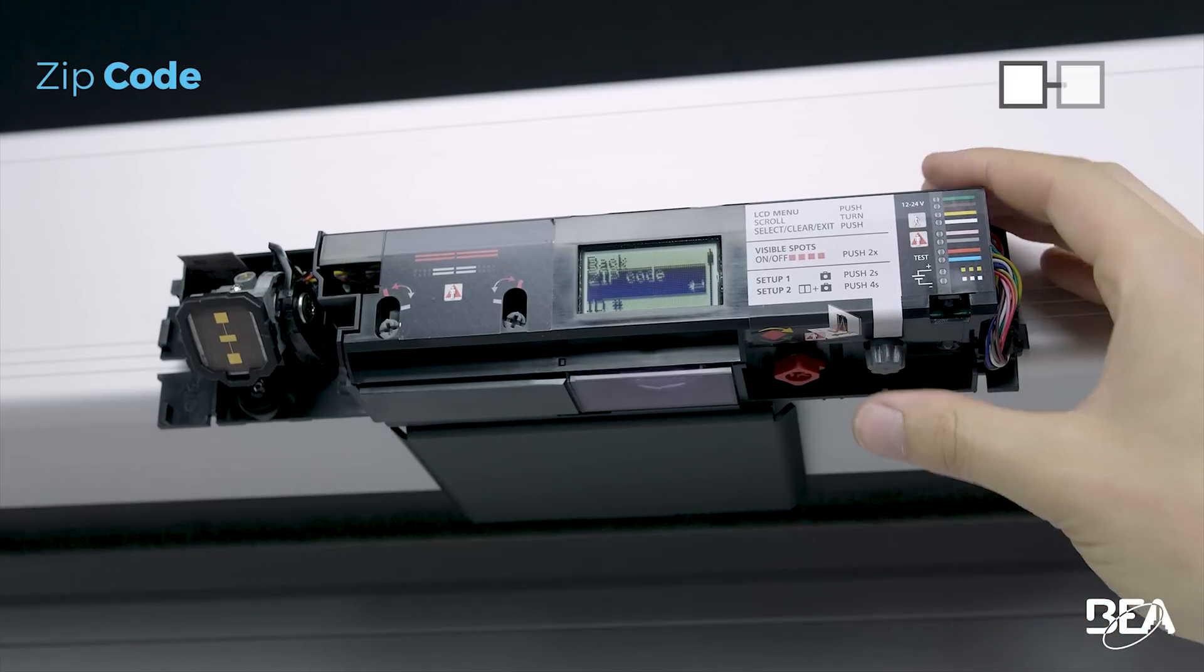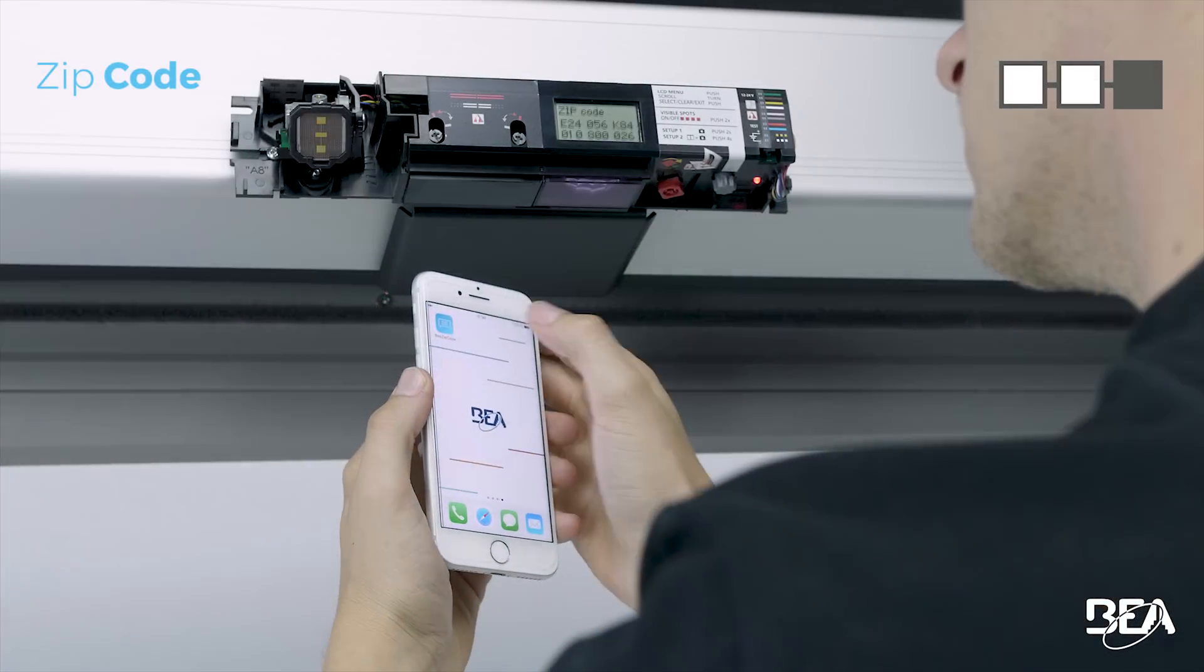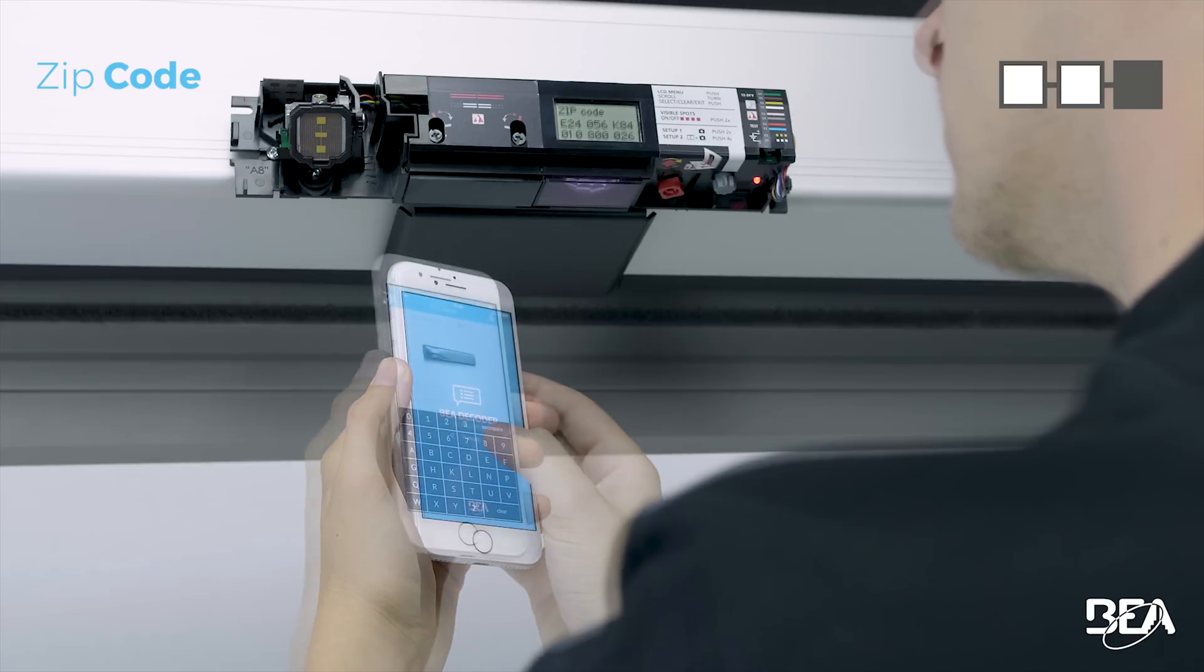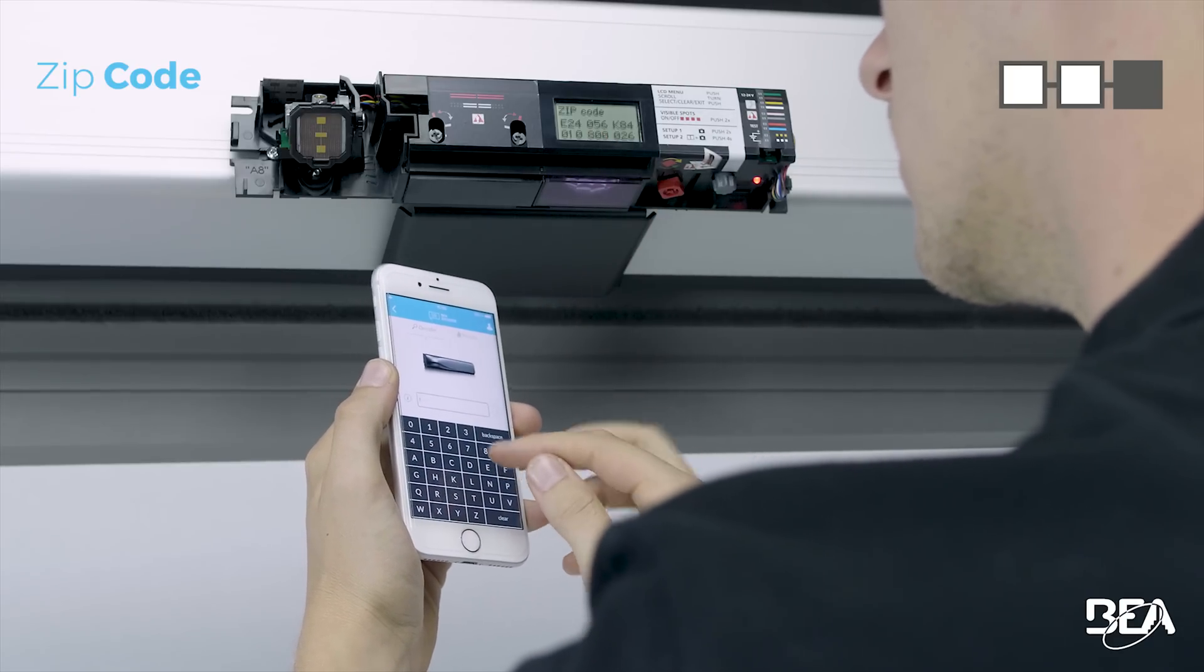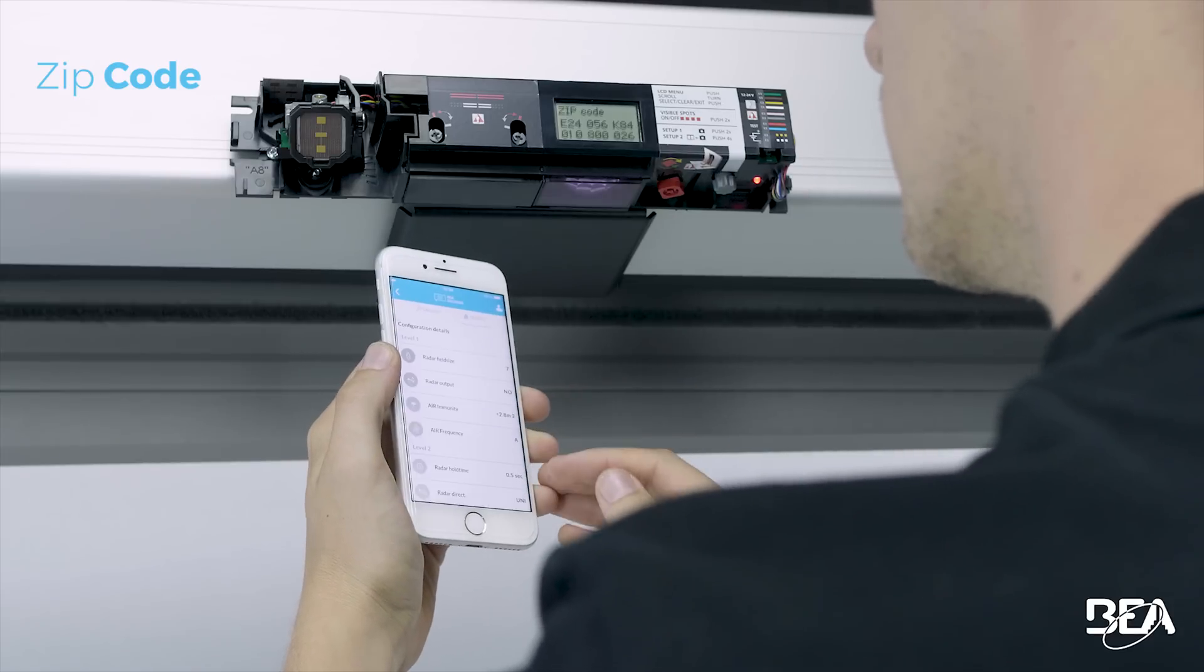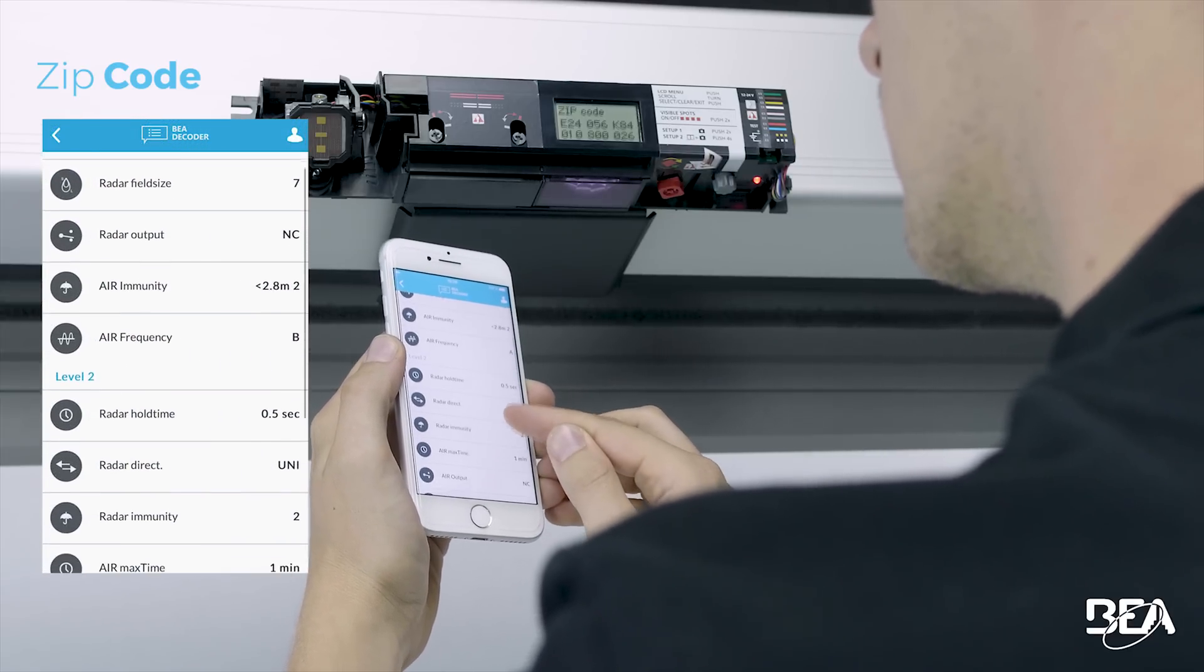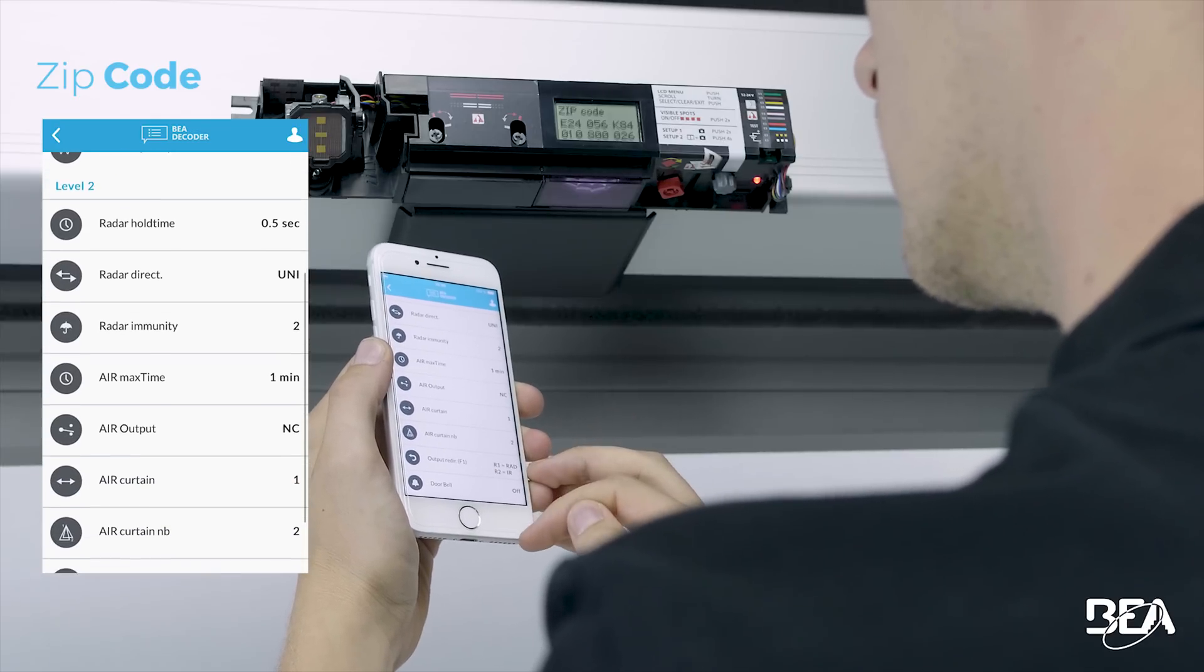In the diagnostics menu, select zip code. The mobile app, BEADecoder, will give you a quick summary of the sensor's current configuration directly on your smartphone. After encoding the zip code, an overview of all selected values is displayed. Take a picture of the zip code for future reference.